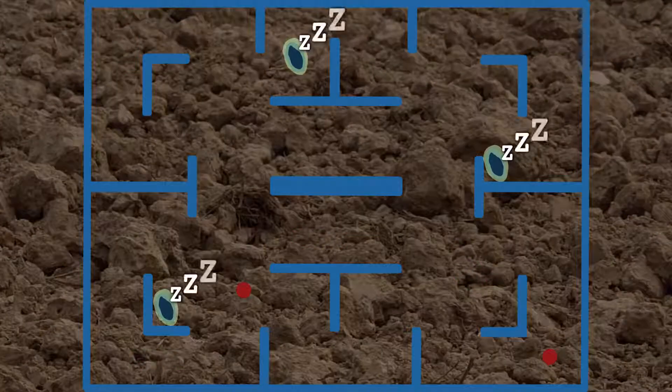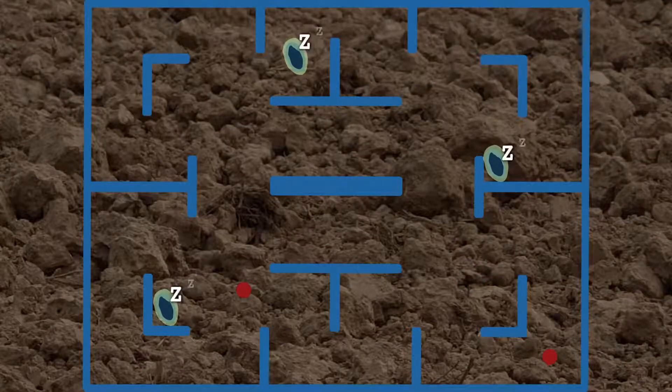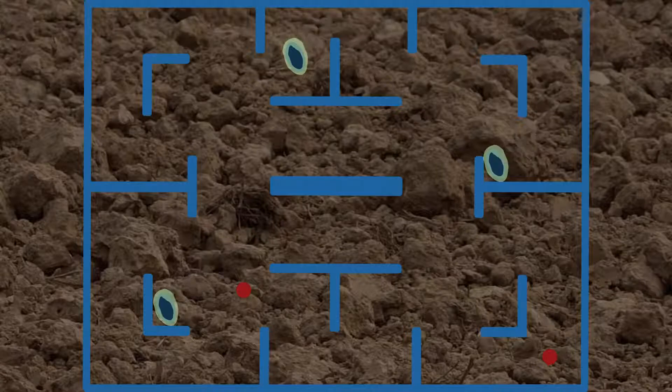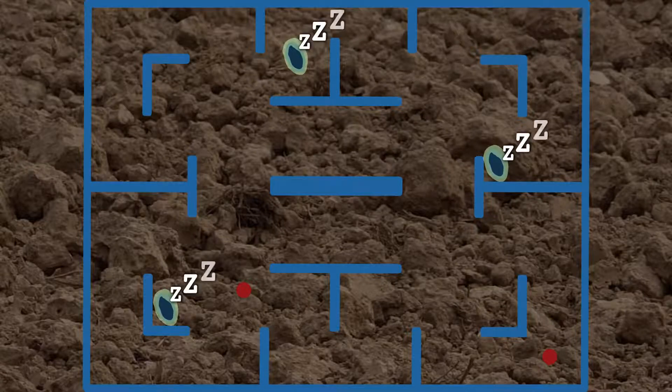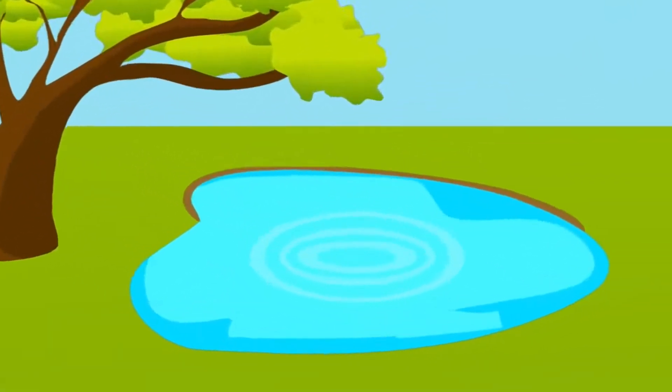In soil, Bt typically stays in the top several inches. There, it remains dormant until extra nutrients become available. In water, Bt is not known to reproduce.